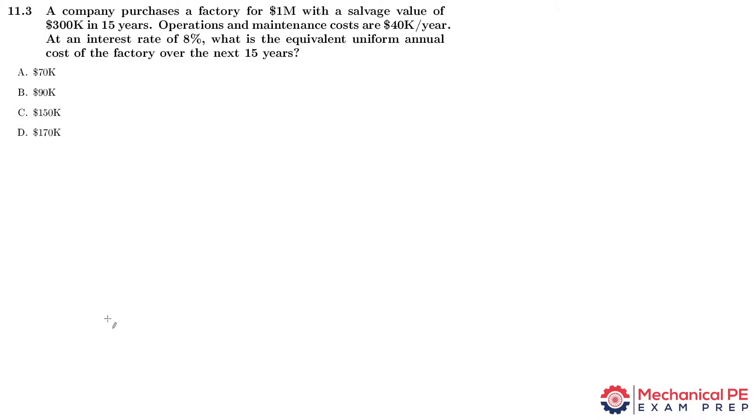A company purchases a factory for $1 million with a salvage value of $300,000 in 15 years. Operations and maintenance costs are $40,000 a year at an interest rate of 8%. What is the equivalent uniform annual cost of the factory over the next 15 years?